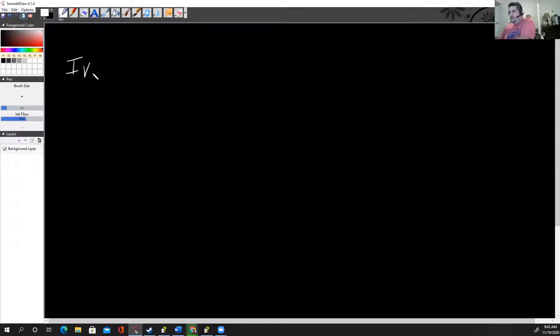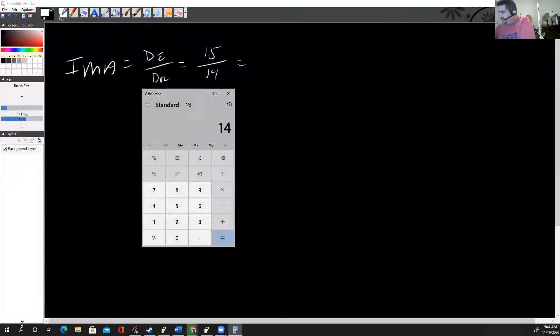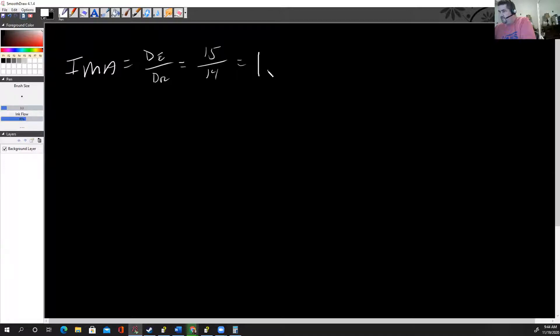To find out the IMA, you just take distance of effort divided by distance of resistance. It's 15 divided by 14. If you bring out a calculator real quick, 15 divided by 14, and it's 1.07.